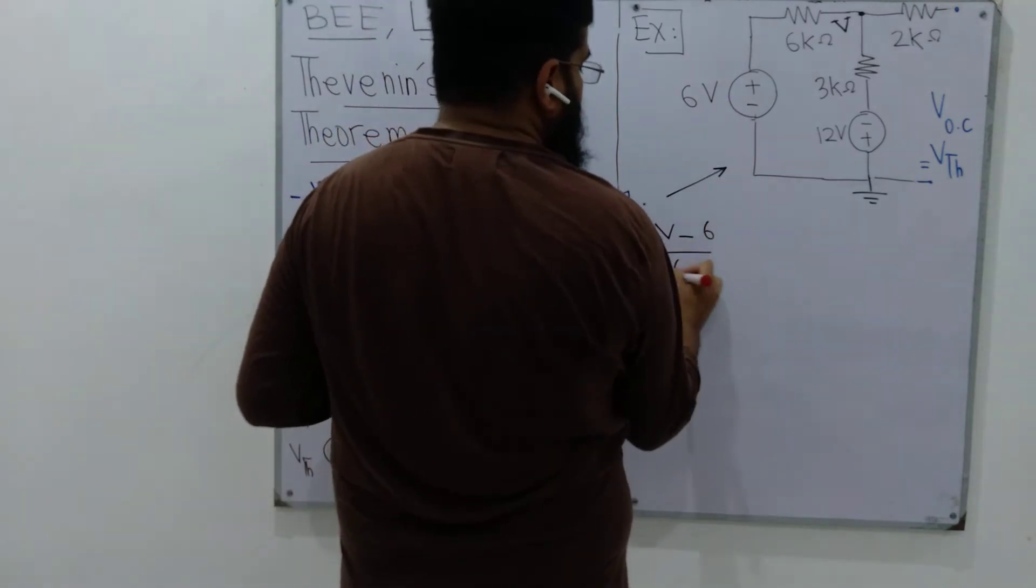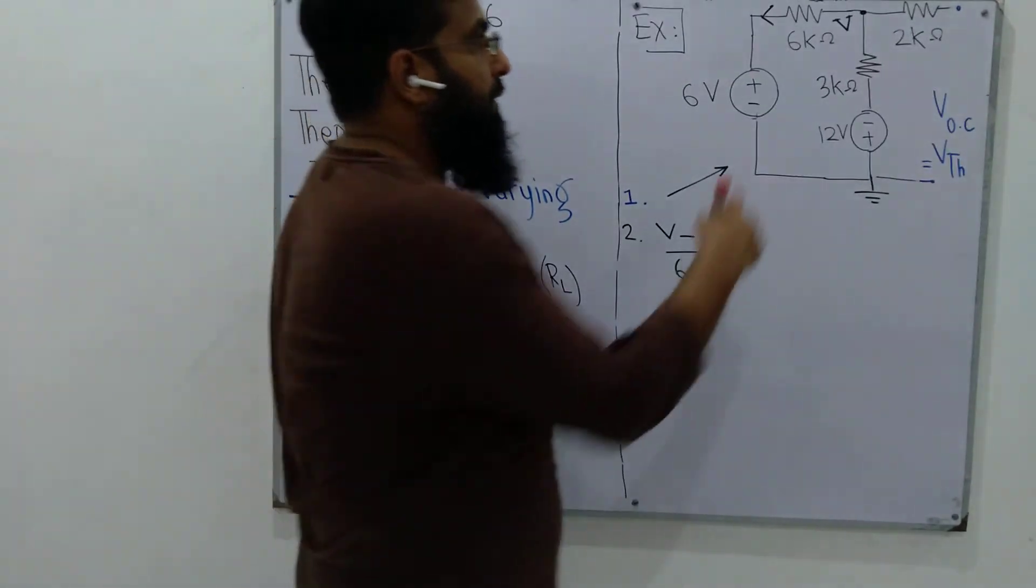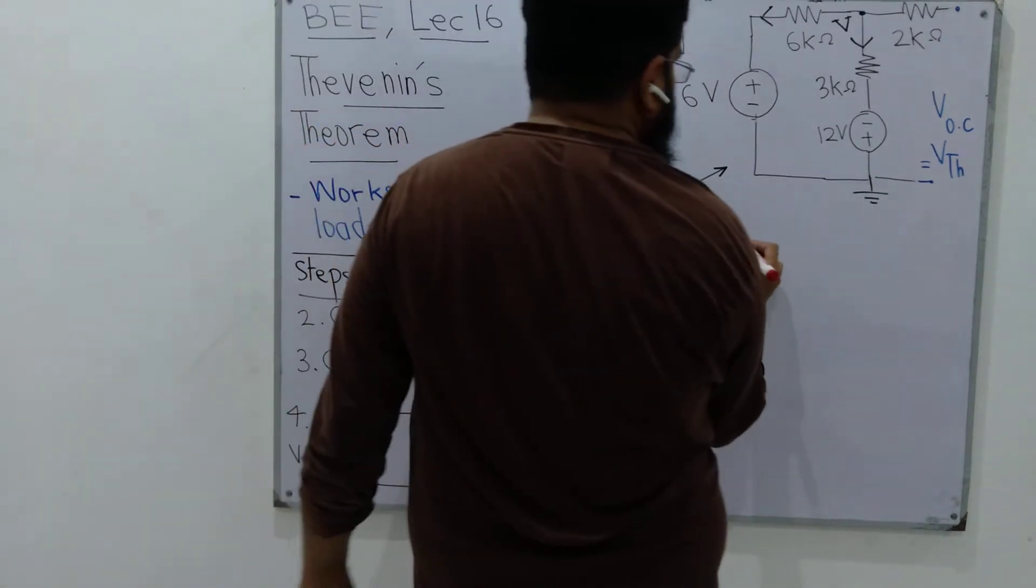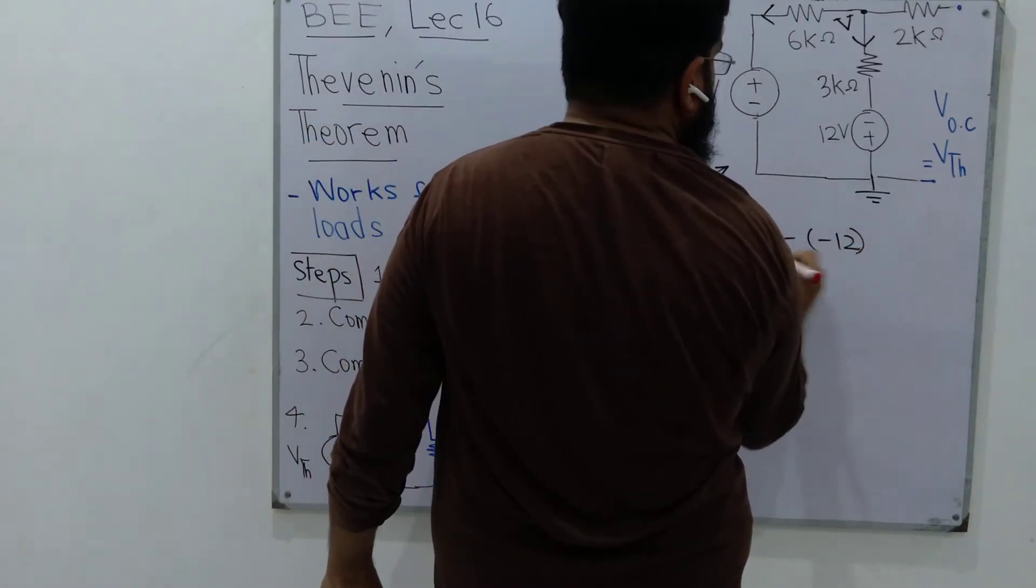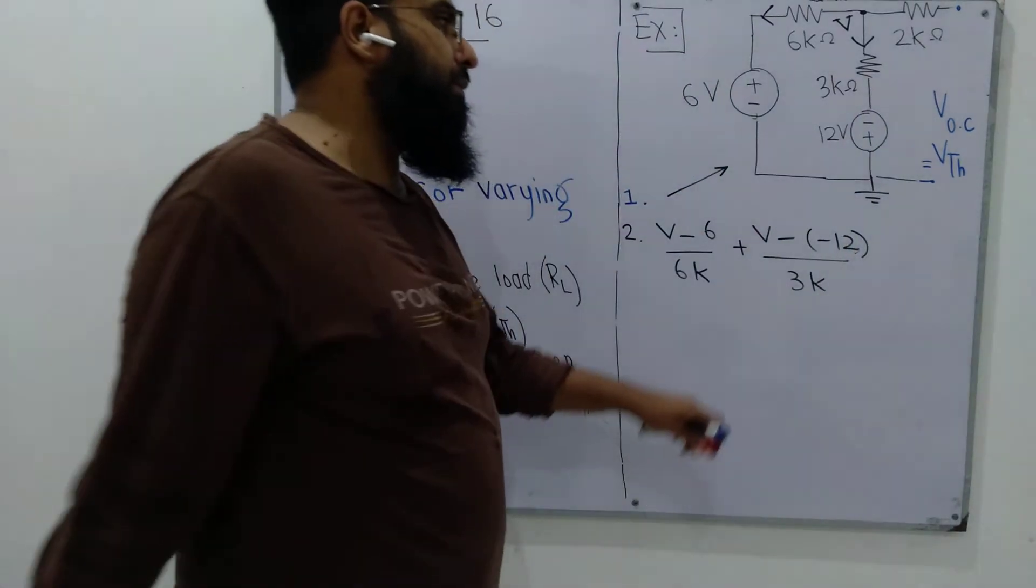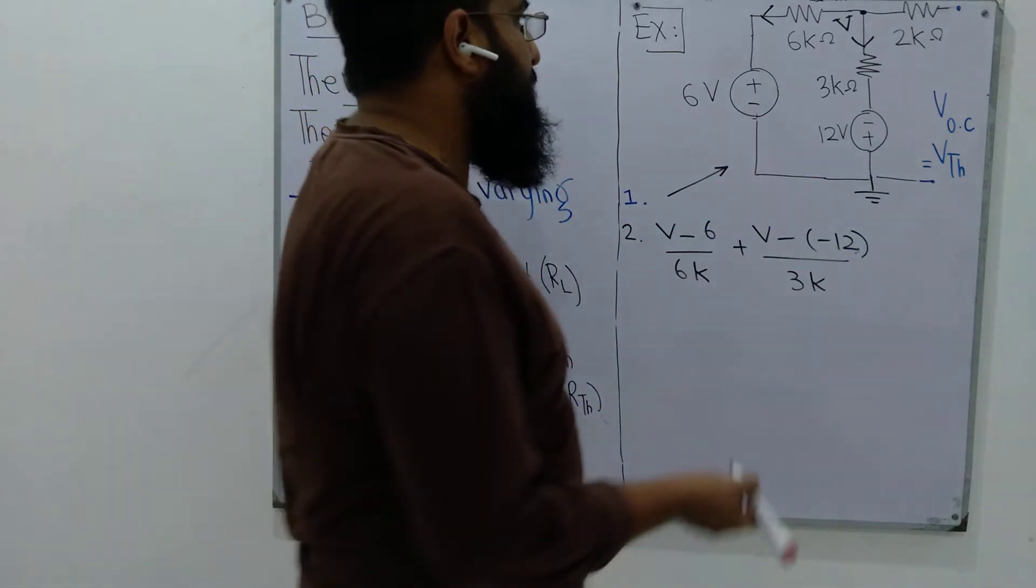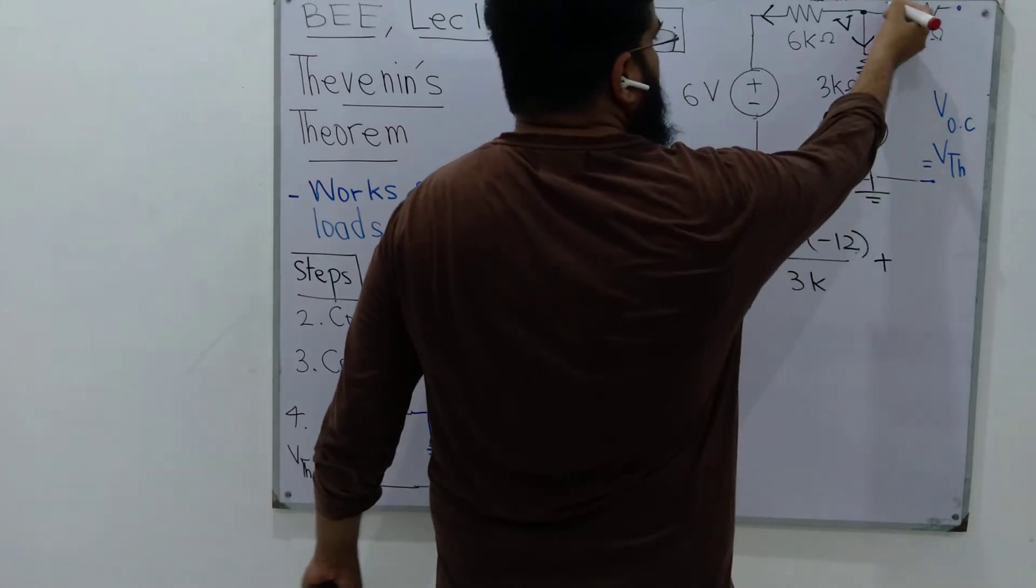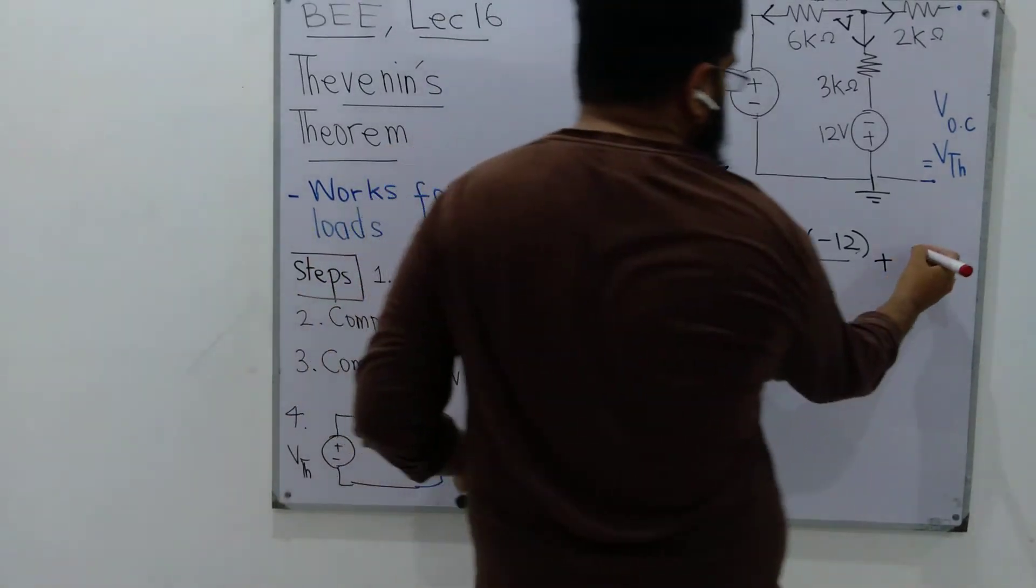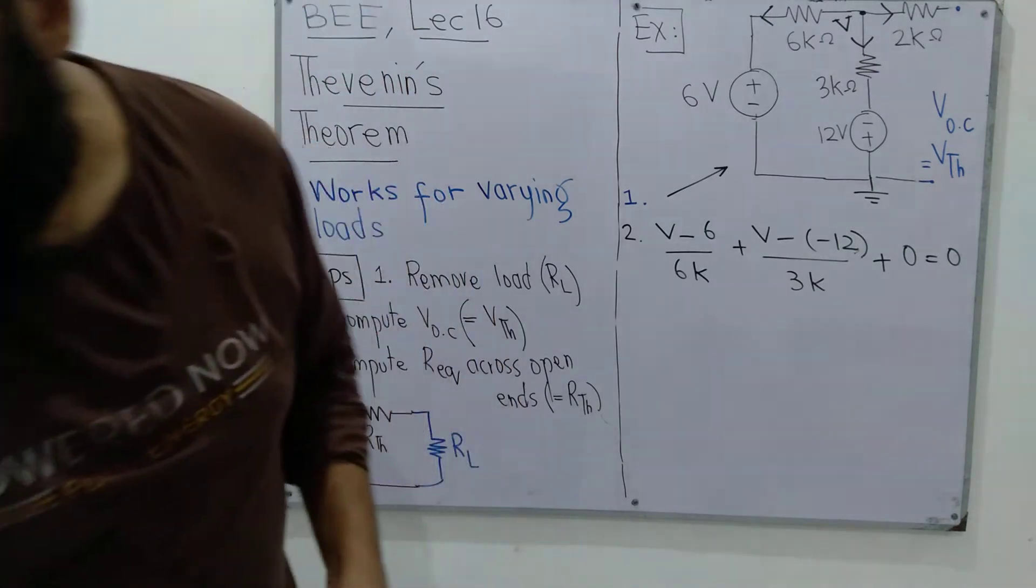For step number 2 we have to compute VOC. For that we compute this voltage first V. The current is V minus 6 divided by 6k, the outgoing current. In this branch the current moving away is V minus minus 12 over 3k. Why is this minus? Because the current is entering from the negative terminal, it's a voltage rise and is taken as negative.